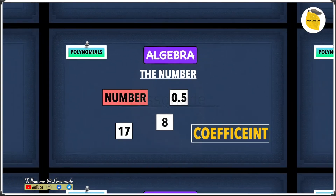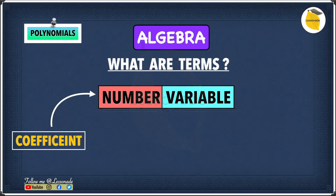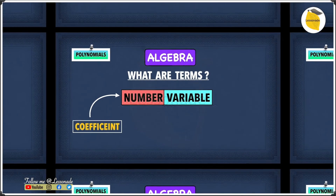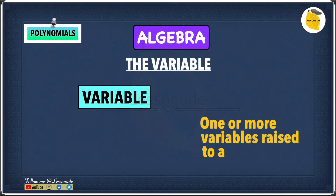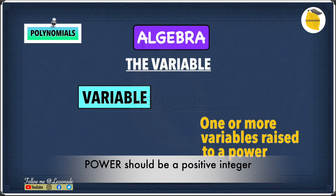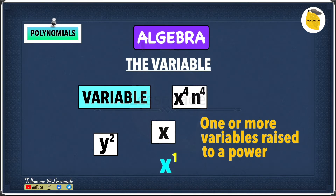Now let's move on to the variable. In terms of the variable, it consists of one or more variables raised to a power. For example, y squared or x. You may wonder: x is not raised to a power. Well, x is the same as x to the power of 1. Another example could be x to the power of 4 times n to the power of 4.